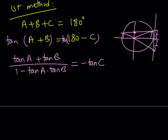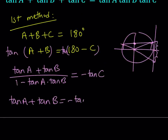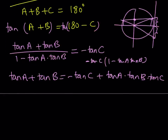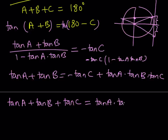Now we're going to manipulate this equation to get the identity. I'm going to cross-multiply: tangent A plus tangent B equals — I multiply 1 minus tangent A tangent B by negative tangent C — giving me negative tangent C plus tangent A times tangent B times tangent C. Then I add tangent C to both sides, and that gives me tangent A plus tangent B plus tangent C equals tangent A times tangent B times tangent C.